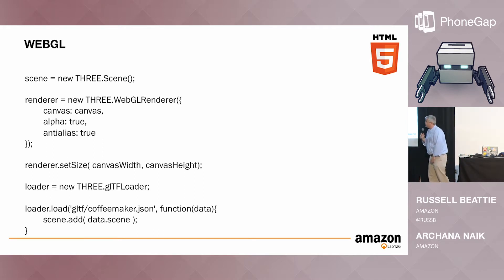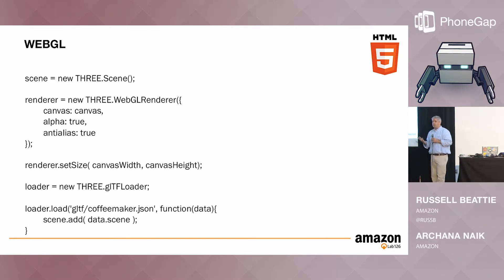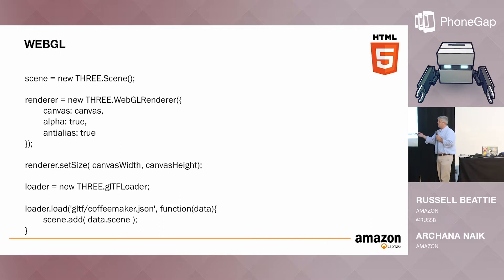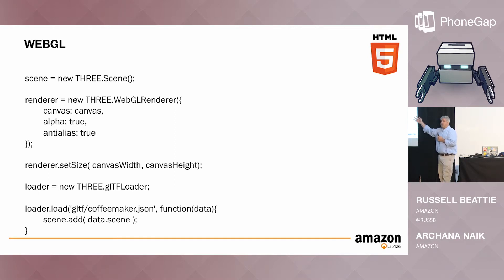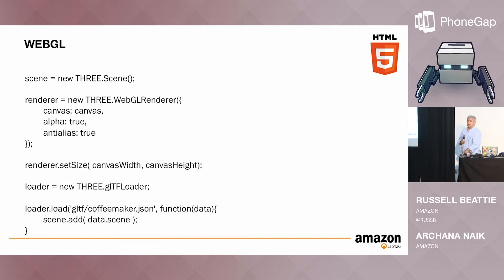WebGL is a fantastic new technology — we launched support for it last year and it really runs incredibly well on our devices because of the GPU integration with the hardware. It can be used for games, visual eye candy, or interactive 3D object models. With a library like Three.js, web developers can easily add and animate 3D models. It's something that iOS 8 also just got recently.